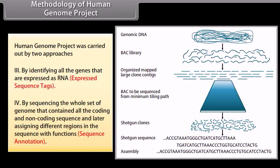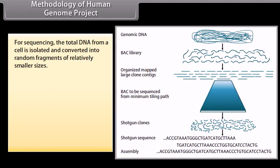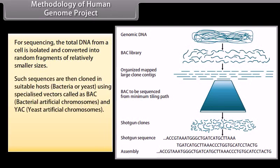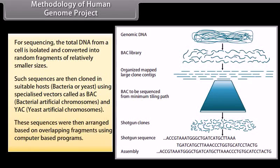Sequence Annotation. For sequencing, the total DNA from a cell is isolated and converted into random fragments of relatively smaller sizes. Such sequences are then cloned in suitable hosts — bacteria or yeast — using specialized vectors called BAC (bacterial artificial chromosomes) and YAC (yeast artificial chromosomes). These sequences were then arranged based on overlapping fragments using computer-based programs.